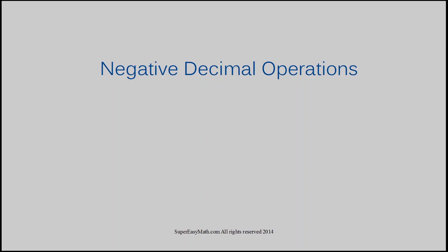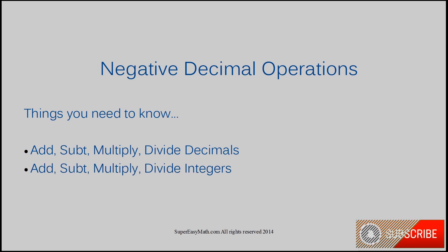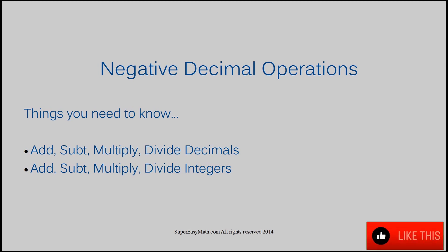Negative Decimal Operations. Things you need to know when working with negative decimals are you need to know how to add, subtract, multiply, and divide decimals. You also need to know how to add, subtract, multiply, and divide integers. Once you know those things, then you should be able to solve any of these problems without an issue.